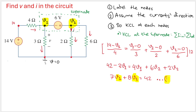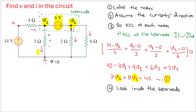The fourth step is to look inside the supernode. We need to do this because there is a 6-volt voltage source inside. That 6 volts represents the difference between the positive node and the negative node.